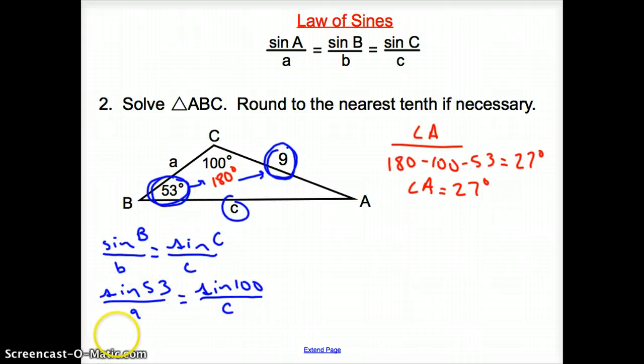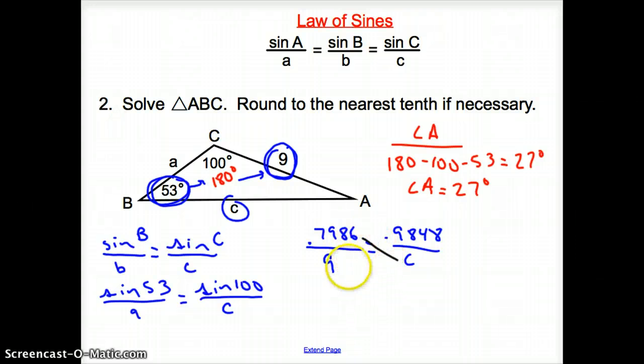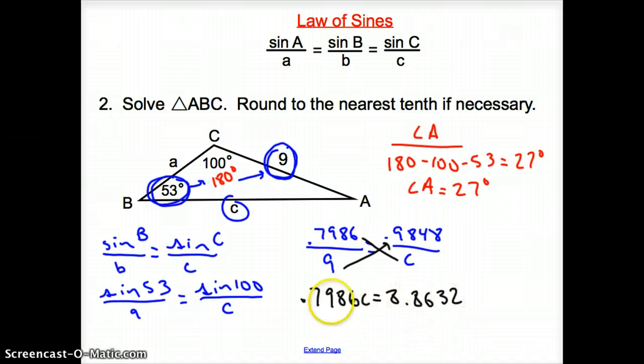So, sine of 53 turns into 0.7986 over 9. I am going to set that equal to 0.9848 over c. We cross multiply here times there to get 0.7986 c. That is going to equal 9 times that mess which is 8.8632. Now, what do we have to do?